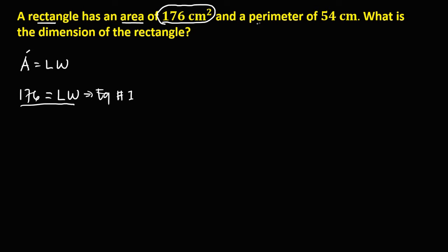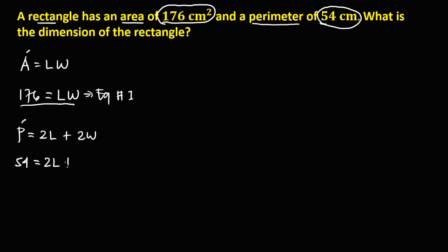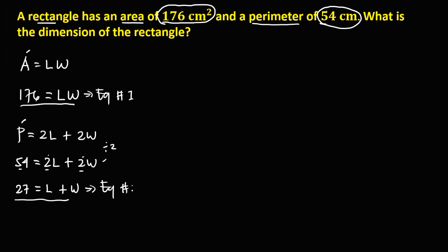To find equation number 2, from the given perimeter, the formula for the perimeter of a rectangle is 2 length plus 2 width. Since the given perimeter is 54 cm, therefore 54 equals 2 length plus 2 width. We can reduce this equation since 54, 2, and 2 are all divisible by 2: 54 divided by 2 is 27, equals length plus width. This is equation number 2.